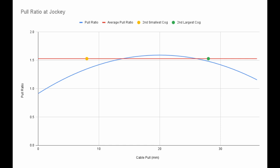The pull ratio isn't constant, so I used the equation to average the pull ratio from the second smallest cog to the second largest cog. The blue line is the measured pull ratio. I used the blue line to determine the average pull ratio of 1.53. On average, pulling one millimeter of cable moves the jockey wheel by 1.53 millimeters.